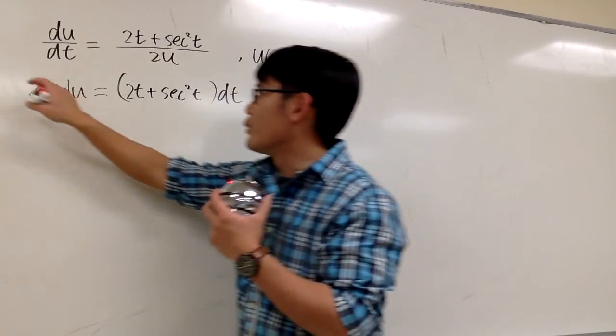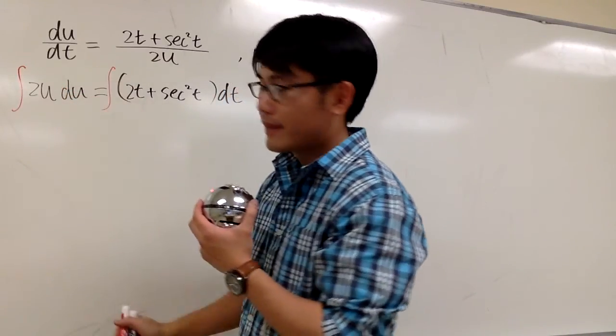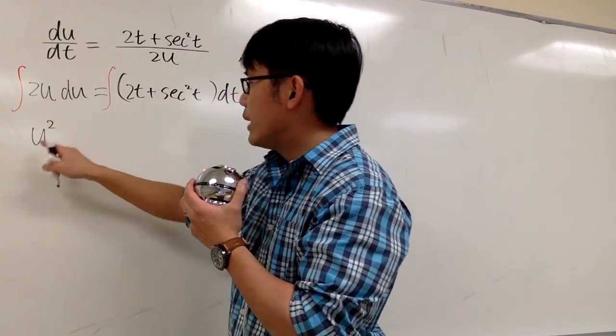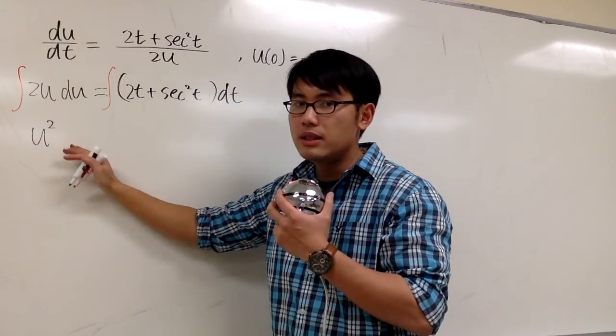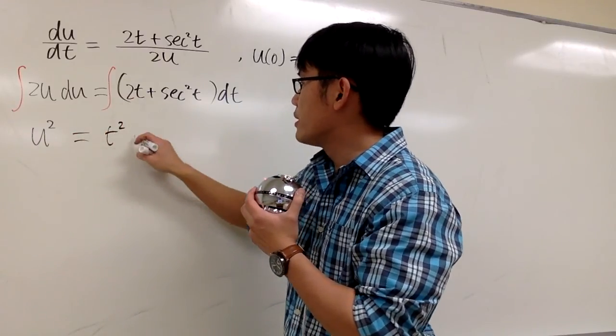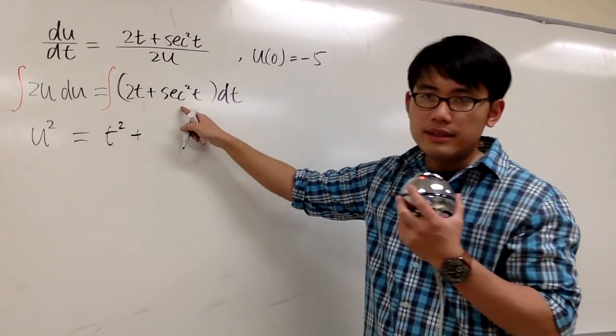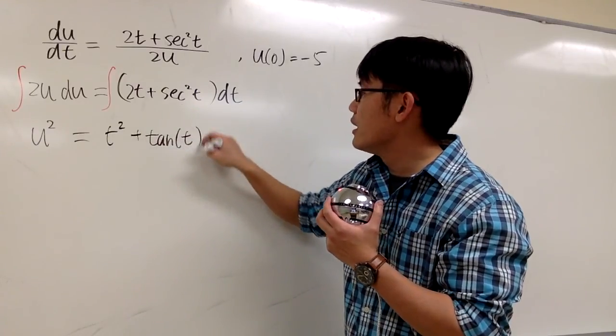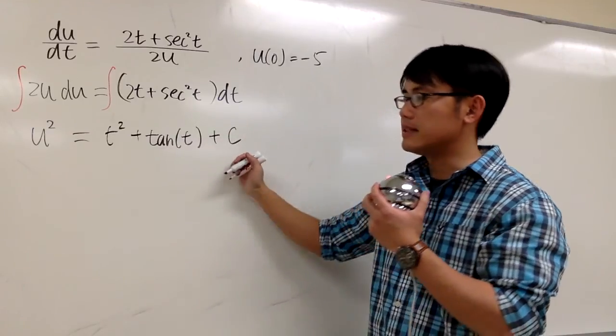So we can integrate both sides now. Integral of 2u is just u², and we don't need to worry about putting down the +c. And this equals integral of 2t is t², and that's plus integral of sec²t is tan(t). And then here we put down a +c.